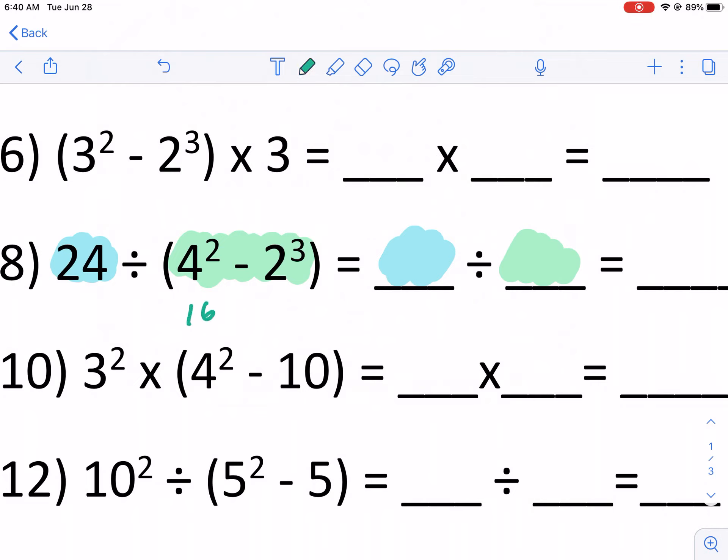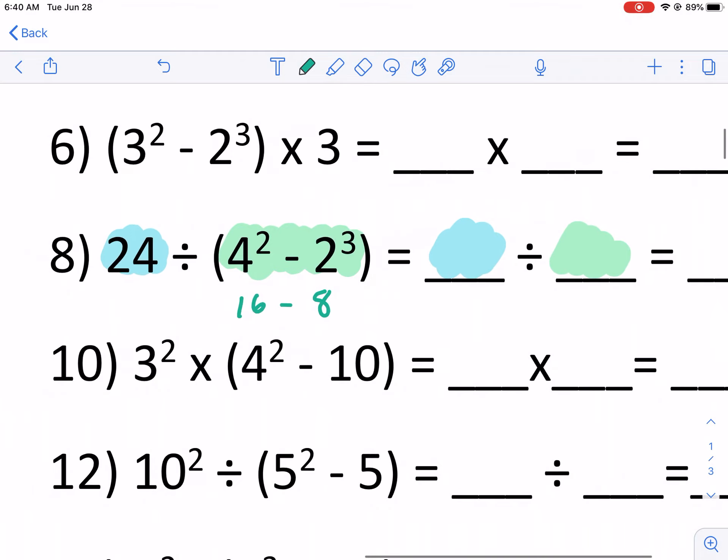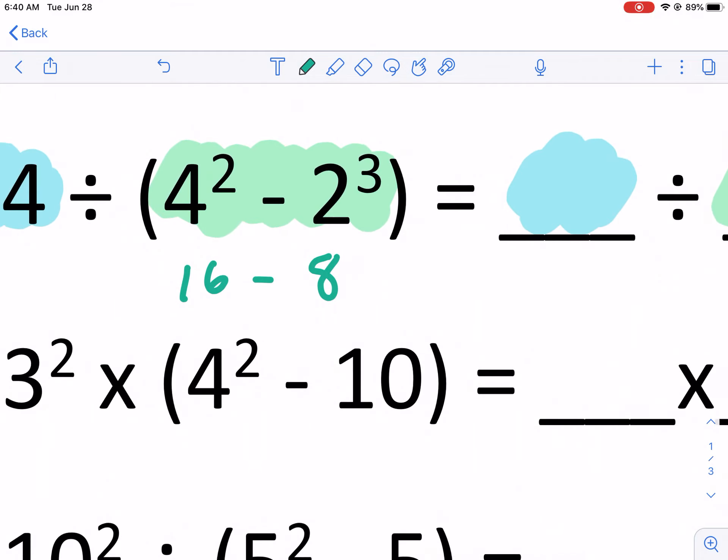So we have 4². That's 16. And then minus 2³. That is eight. That we already established. That's two times two times two, three times. That's what exponents are. So now I do 16 minus eight. I had to do my exponents first. Check, check. Now I can do subtraction.